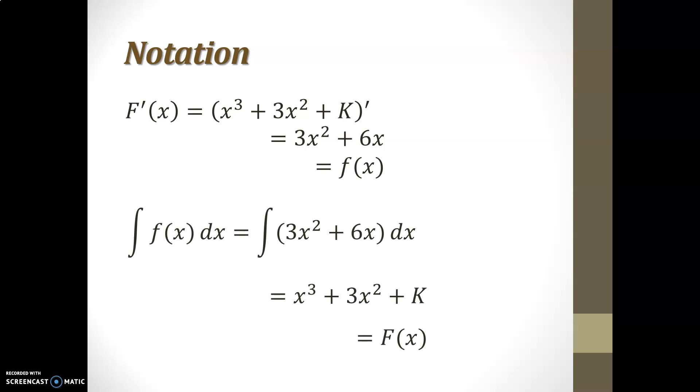In our situation in Cal 2, we will indicate the anti-differentiation process by using the elongated s symbol. So this is an indeterminate or an indefinite integral that acts on function 3x squared plus 6x to produce the most general anti-derivative x cubed plus 3x squared plus k.